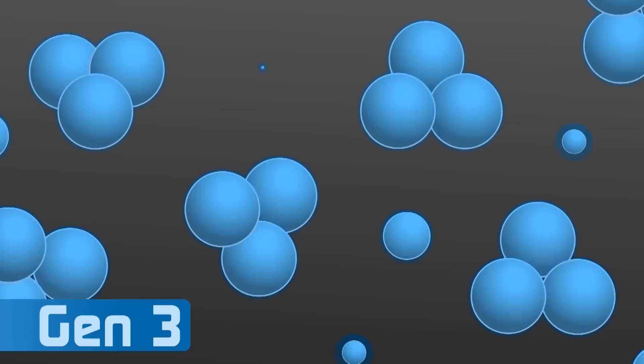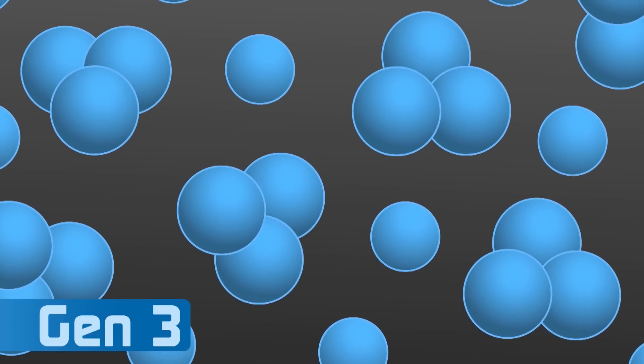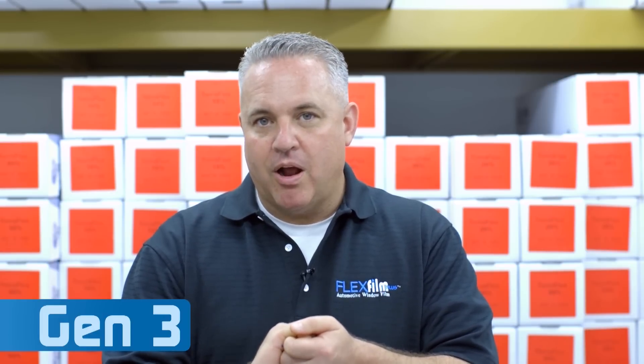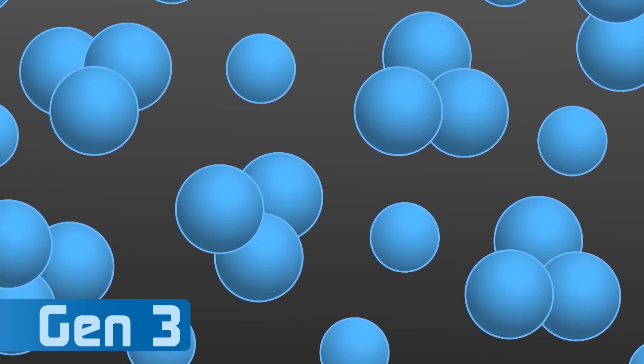In generation three we were exactly where we were in all the previous generations, except we figured out how to make the particles even smaller. But there was still another problem: at that size the particles were starting to clump together. The carbon molecule is very tricky — a lot of people trying to do what we're doing are having the same problem of how do you keep these molecules from sticking together?